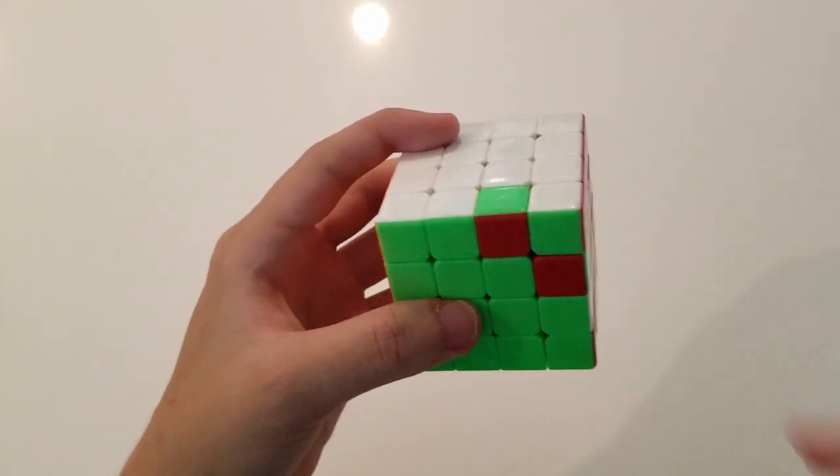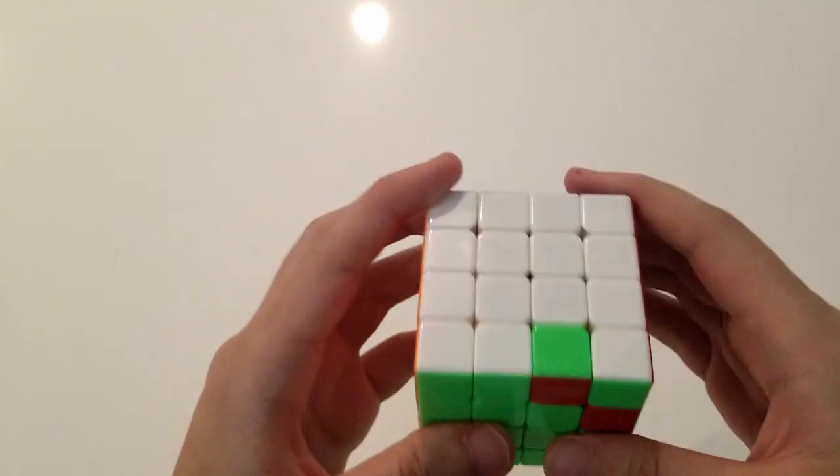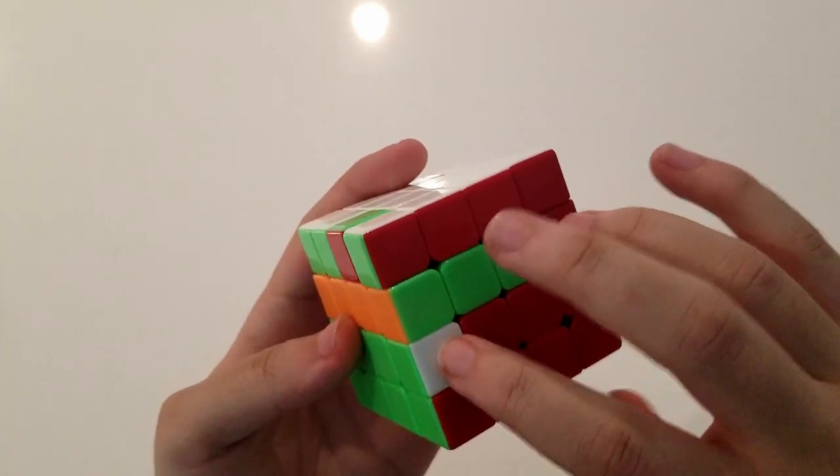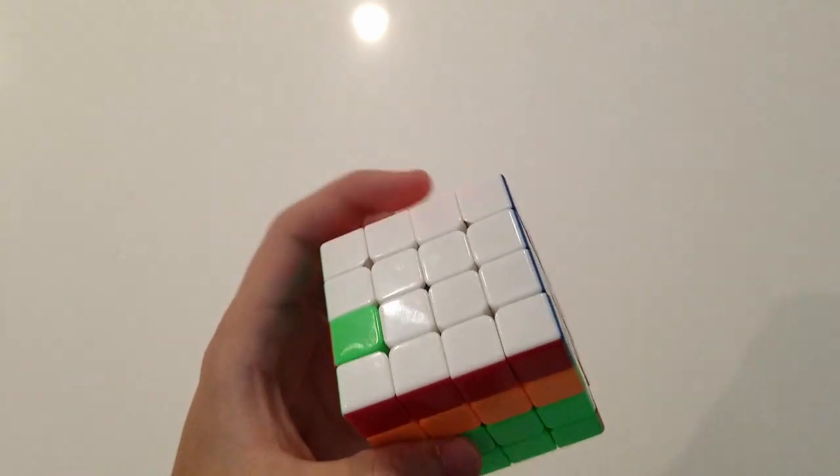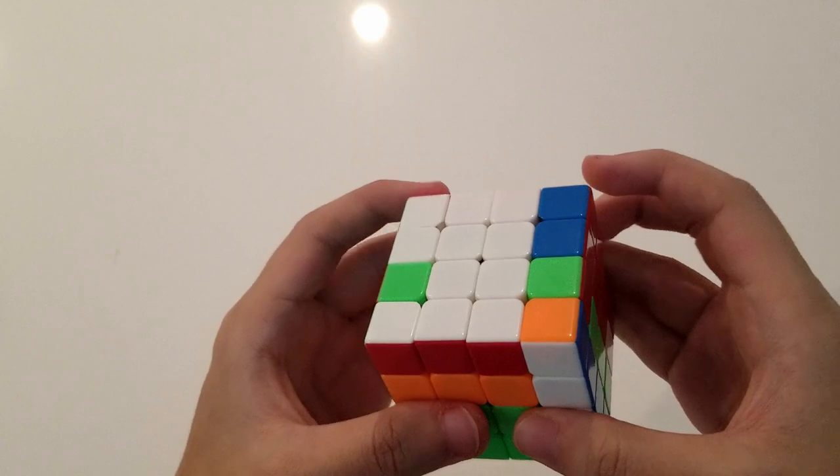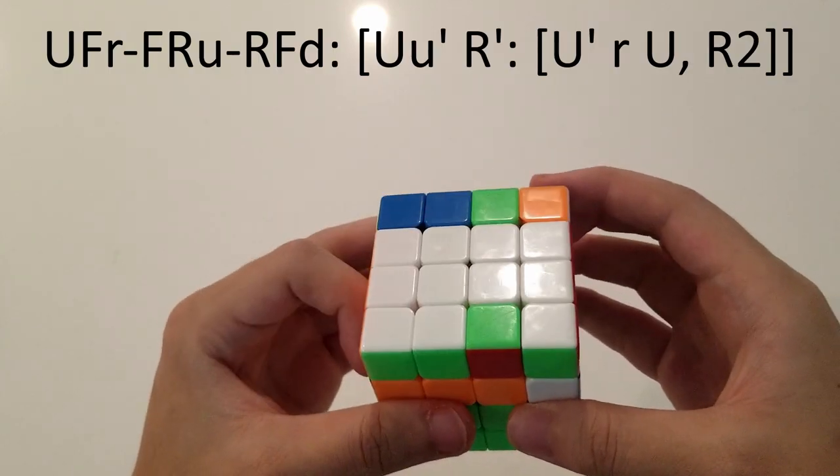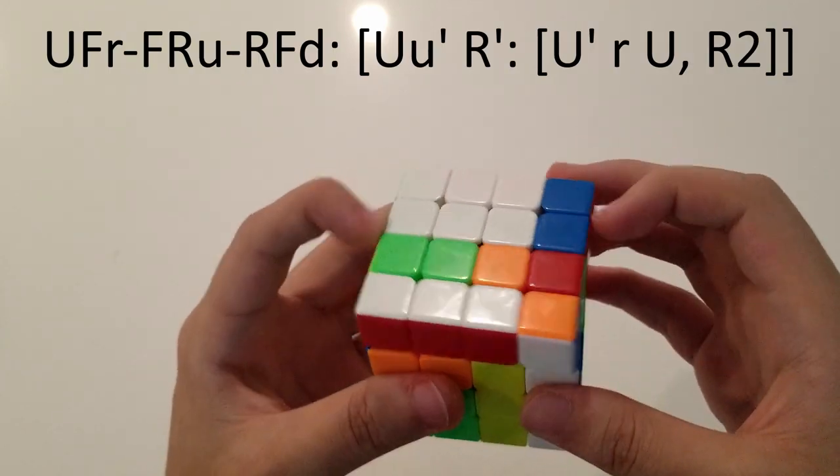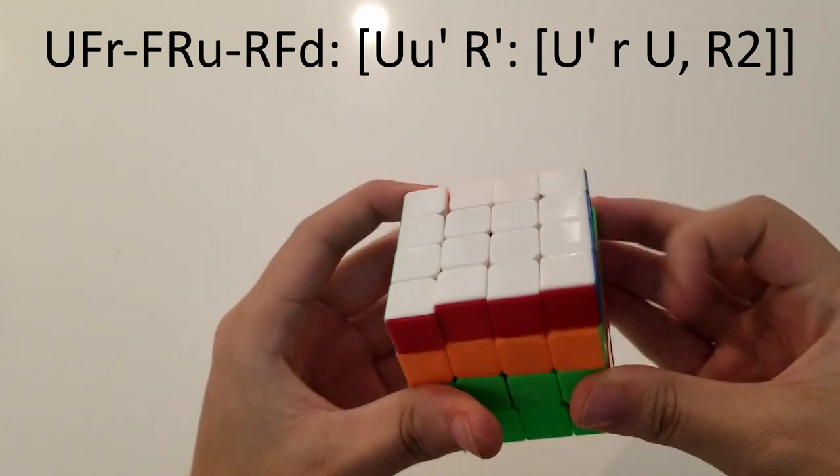For this case, where the targets are on FR, the way you can solve this is to do a U' slice to make these interchangeable with R-2, and a U at the same time to bring this over here. Now, when you do an R', this is in here, and we can do an insertion with U' R-slice U, and just finish the alg off like that.